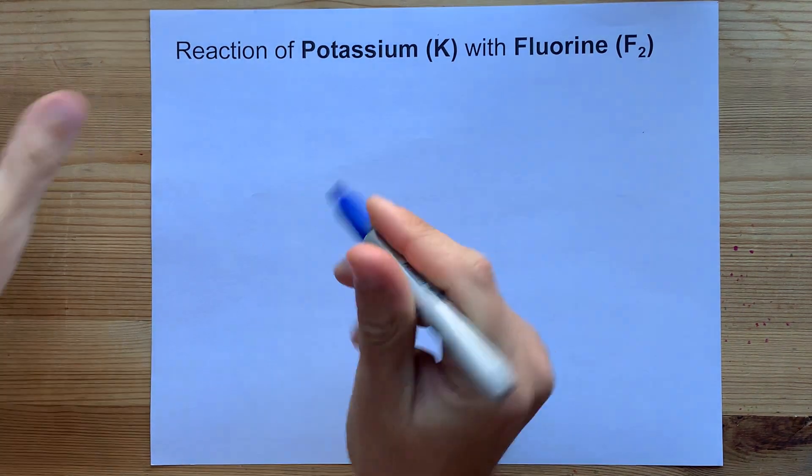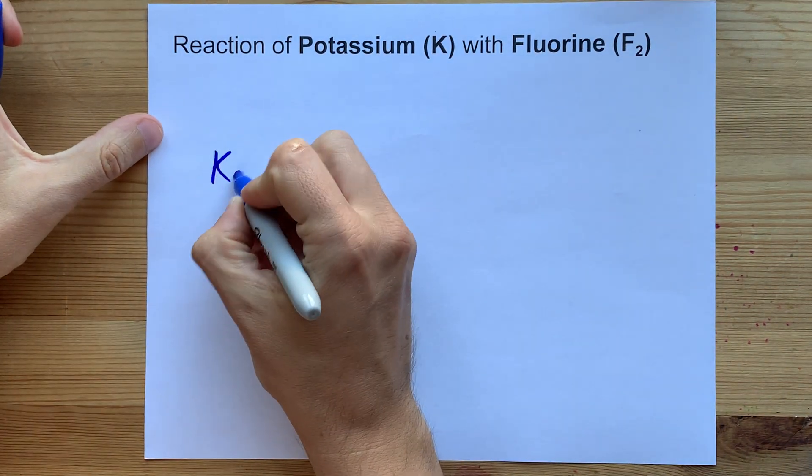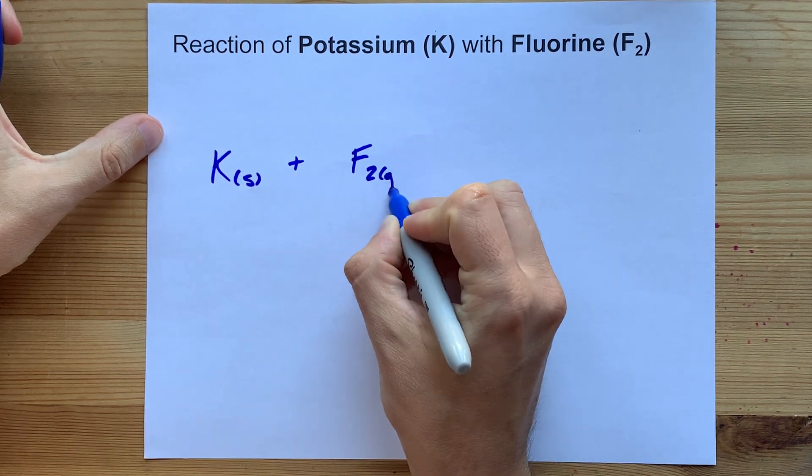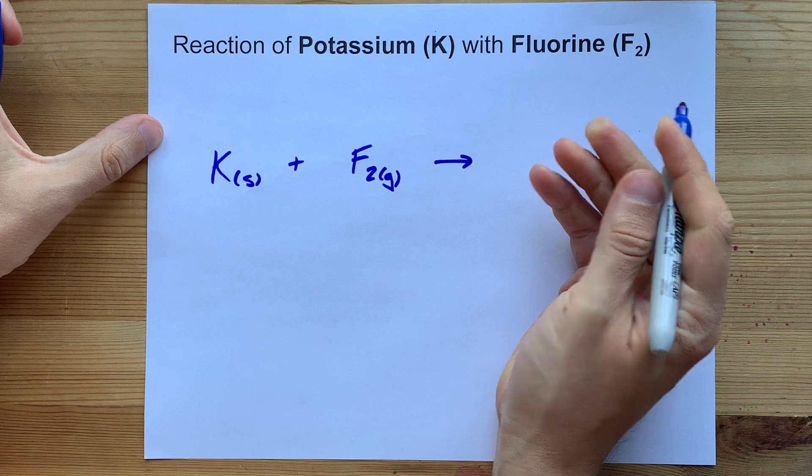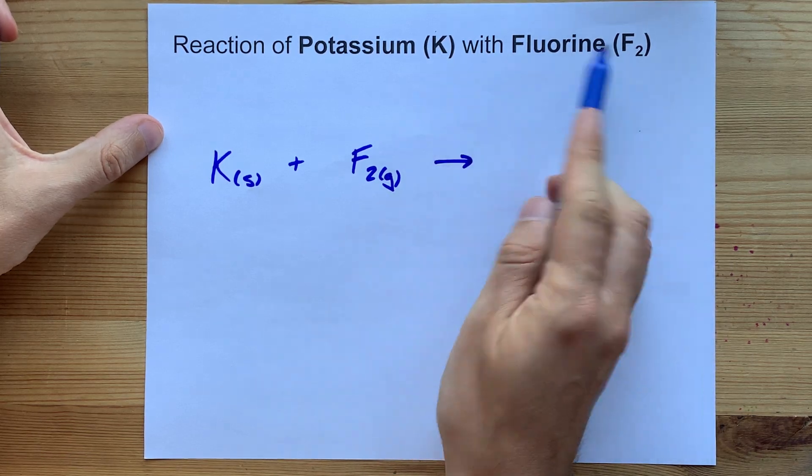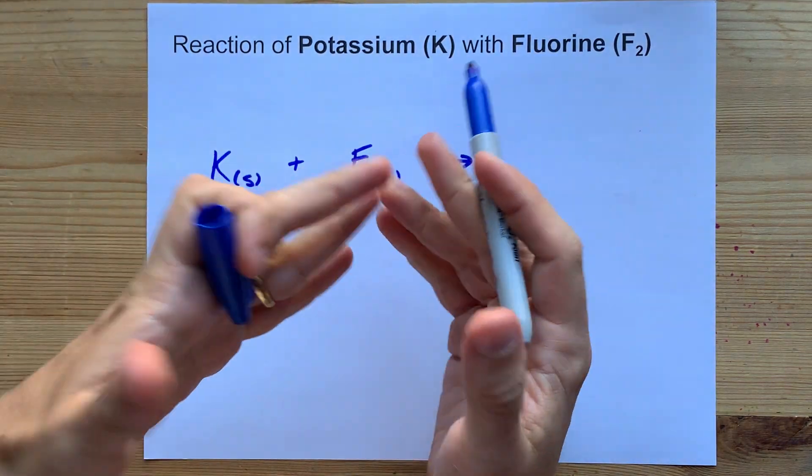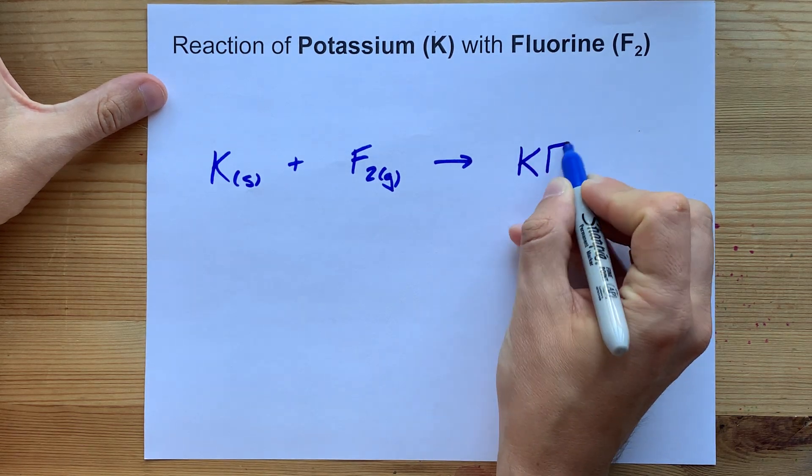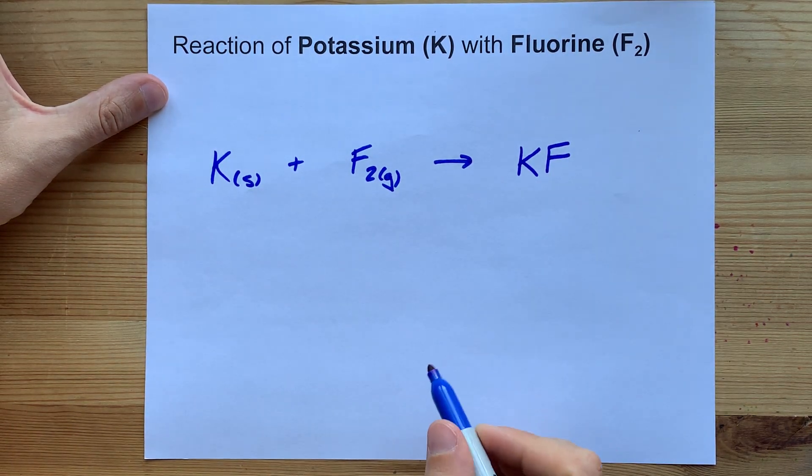There are no surprises here. When solid potassium metal is reacted with fluorine gas, a halogen, there is a synthesis reaction where the two types of atoms combine to form a single substance, in this case an ionic compound potassium fluoride.